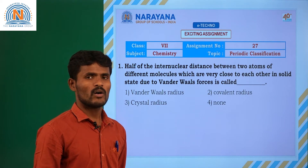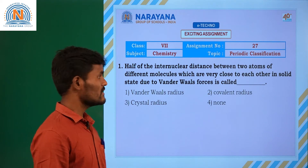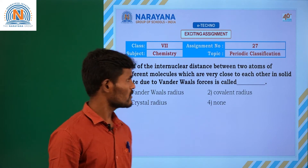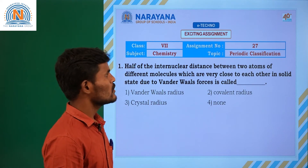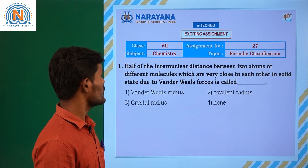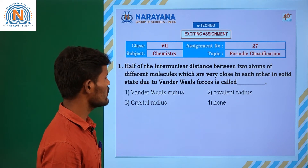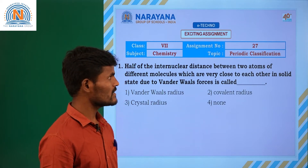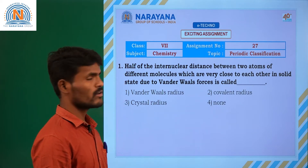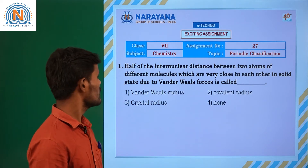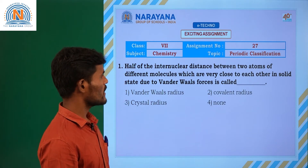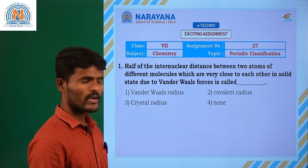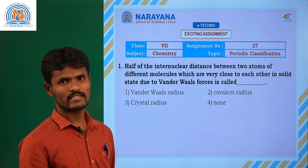Our first question is: half of the internuclear distance between two atoms of different molecules which are very close to each other in solid state due to Van der Waal forces is called Van der Waal radius.